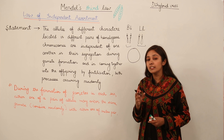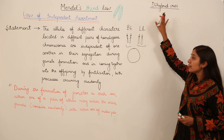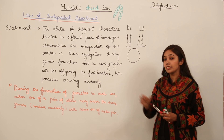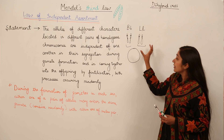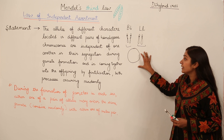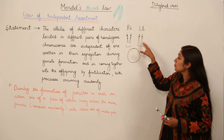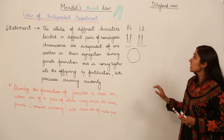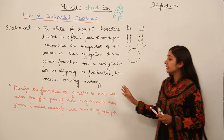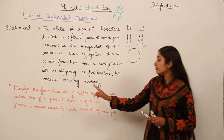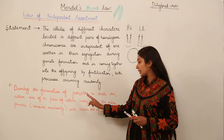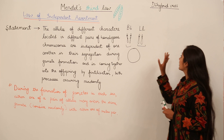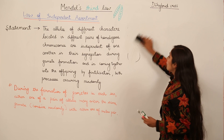By performing the dihybrid cross, Mendel answered these questions. Whenever we have alleles referring to two different characteristics and they segregate during gamete formation, the results obtained show that they are independent of each other. The alternative statement says: during the formation of gametes in each sex, either one of a pair of alleles may enter the same gamete combined randomly with either one of another pair. We will understand this through the dihybrid cross.